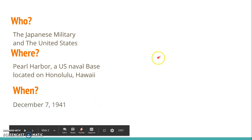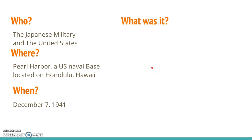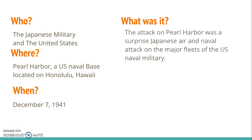When did it happen? This occurred on December 7, 1941, during World War II. An interesting fact to note is that the Japanese military actually spent several months planning in advance for the attack. What was it? The attack was basically a surprise Japanese air and naval attack on the major fleets of the U.S. naval military — the major military ships of the U.S.